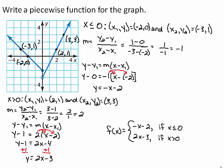So a piecewise function for the graph is f of x equals negative x minus 2 if x is less than or equal to 0, and f of x equals 2x minus 3 if x is greater than 0.